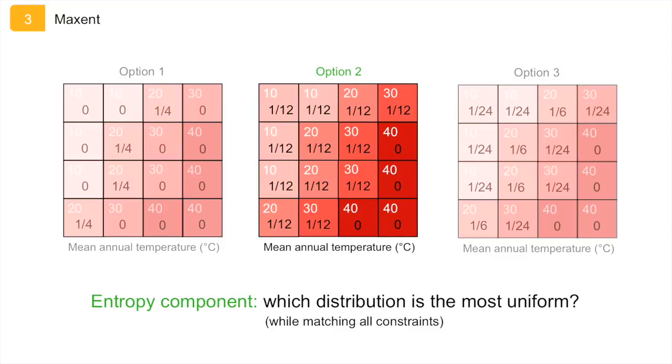While this example only included one environmental variable, Maxent of course uses a suite of variables to model the distribution of a species, and these are called features. Maxent considers six types of features, and each of these types allows a different possible shape of the response curves, and has different implications for the constraints.